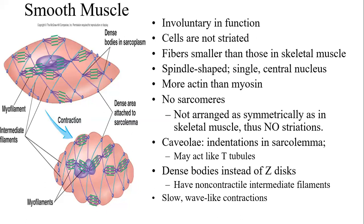In terms of function, smooth muscles are involuntary. The cells are not striated — the sarcomere arrangement is not found in smooth muscle cells. In cardiac and skeletal muscle cells, we have the sarcomere: the distance from one Z-line to the next, with thin and thick filaments arranged to form the myofibrils responsible for striations, creating the darker A-band and lighter I-band. But smooth muscle cells don't have that arrangement.